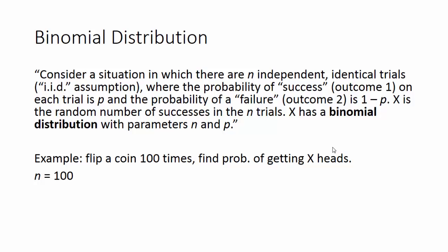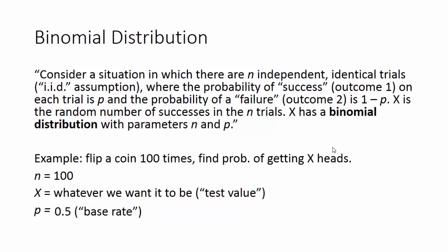The parameter n is the number of trials. X — I call it the test value — can be set to any number between zero and n: probability of zero heads, 50 heads, or 100 heads. For a fair coin flip, p equals 0.5. The probability p will be a known variable usually based on some kind of base-rate data we already have going into an analysis situation.